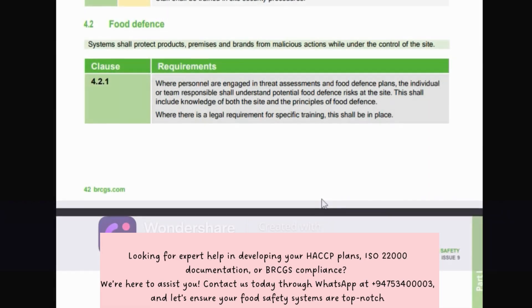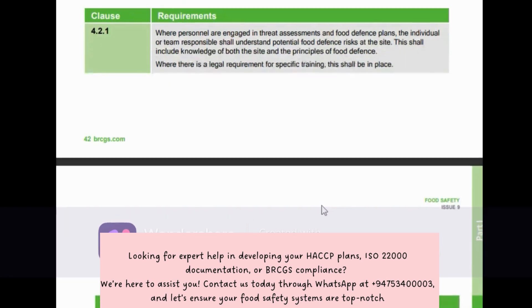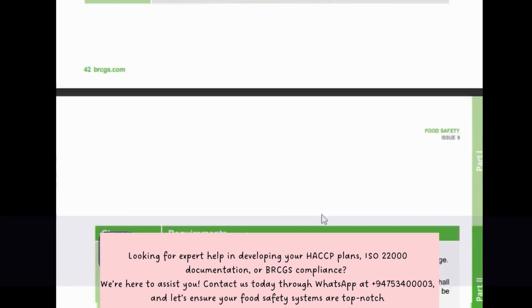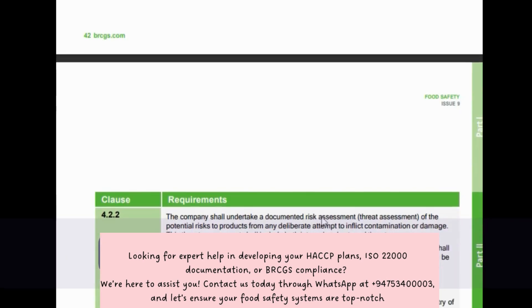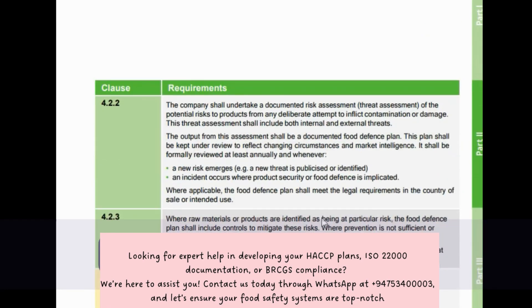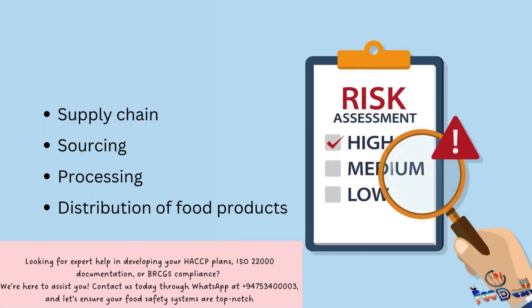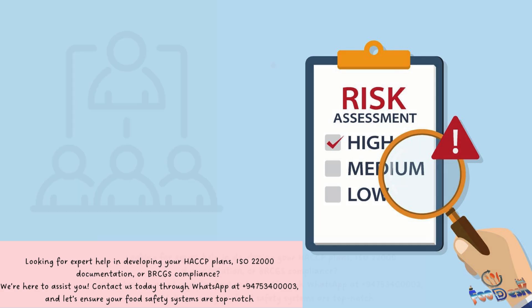According to Clause 4.2, businesses are required to conduct thorough risk assessments to identify any vulnerabilities within their processes. This includes assessing risks of intentional contamination in all areas of the supply chain, including the sourcing, processing, and distribution of food products.